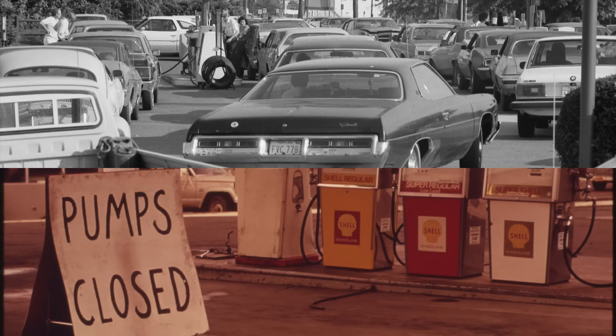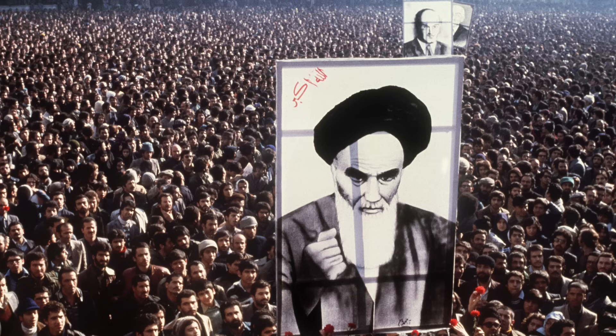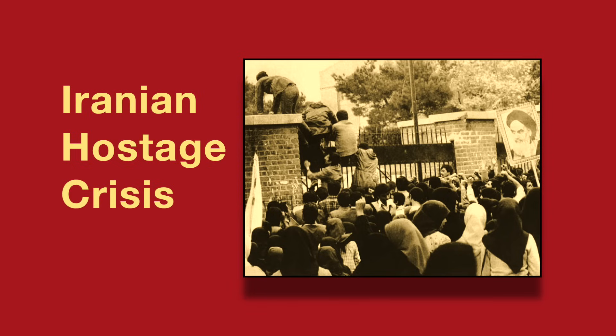This shortage was partially caused by the Iranian Revolution of 1979, in which a new Islamic government, hostile to the United States, overthrew the old one. And this soon led to the Iranian hostage crisis, in which 52 American diplomats and citizens were held hostage after a group of Iranian revolutionaries took over the U.S. Embassy in Tehran.